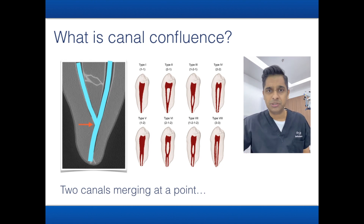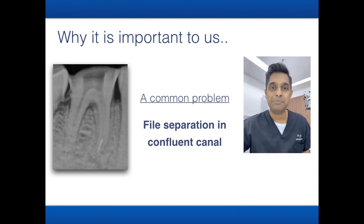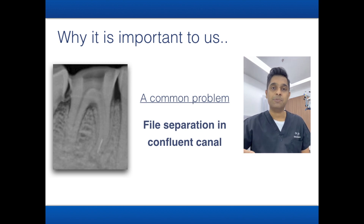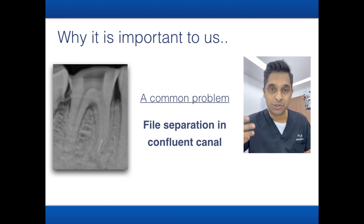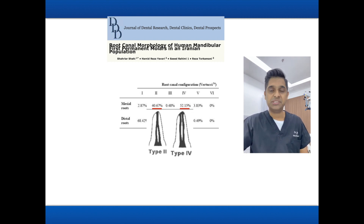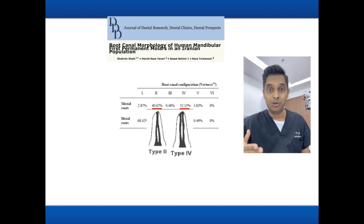This topic is very important because one major reason for discussing it is to raise awareness of file separation in confluent canals. There are numerous cases where file separation occurs and retrieval is needed. Studies published in the Dental Research Journal on lower molars show that the mesial root has two canals, and close to 40% of the time they are confluent.